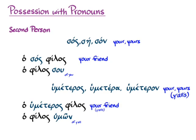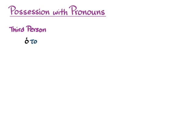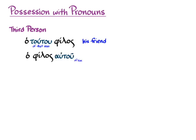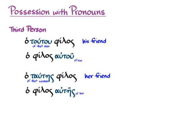In the third person, our options are only with pronouns. For the attributive position version, you use the genitive of houtos, haute, touto. So ho toutou philos means 'the friend of that man,' or 'his friend.' In the predicate position, you use the genitive of autos, aute, auton: ho philos autou — 'the friend of him,' also 'his friend.' We can also make this feminine: ho tauteis philos or ho philos auteis — both meaning 'her friend.'